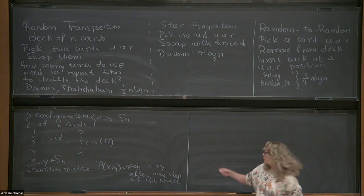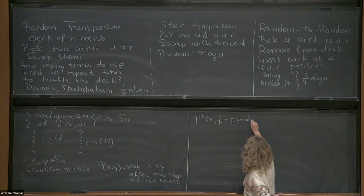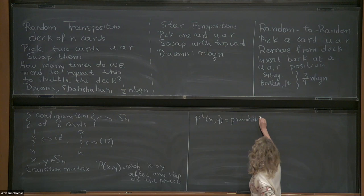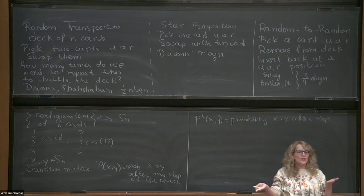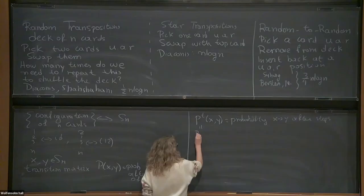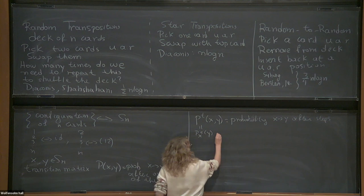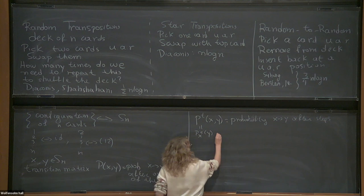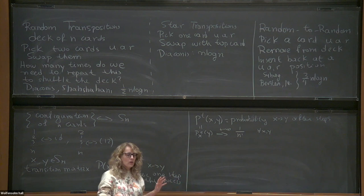If we take the t-th power of the transition matrix and look at the (x,y) entry, this gives us the probability of moving from x to y after t steps. We understand powers of matrices through diagonalization much more easily. As y varies, this is a probability measure, and as t goes to infinity classical theory tells us these values converge to 1 over n-factorial for every x and y — this is the convergence we want to understand.